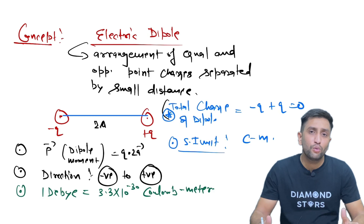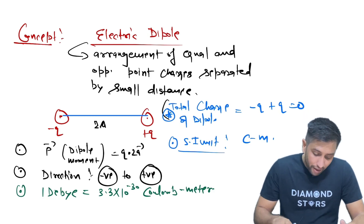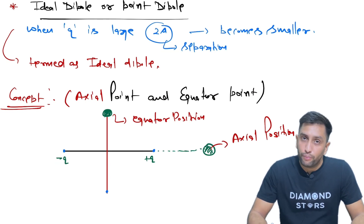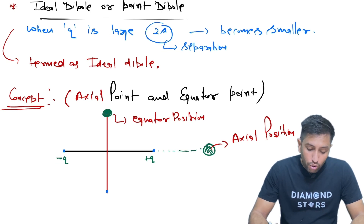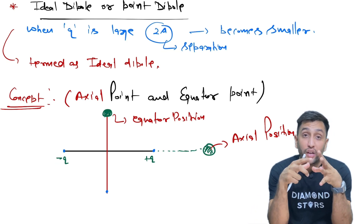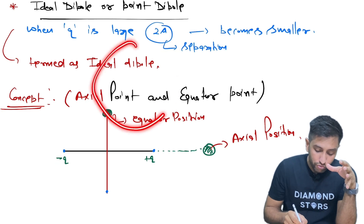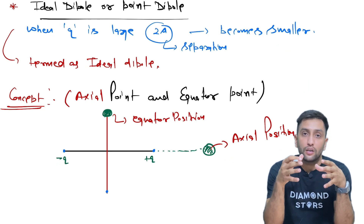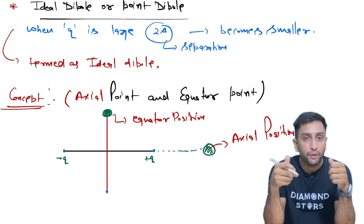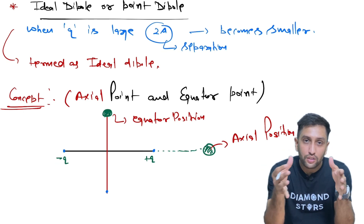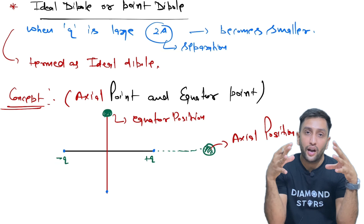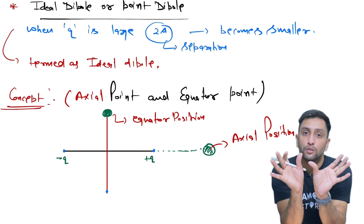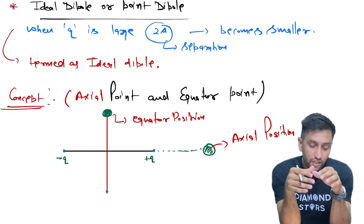When you are asked what is the net charge over the dipole, definitely it is 0. The SI unit — the formula has q in coulombs and 2a as distance in meters, so the unit is coulomb meter. This is also defined in Debye, where 1 Debye = 3.3 × 10⁻³⁰ coulomb meter. Now let me switch to a very basic concept — the ideal dipole. When q is very large and the distance is very small, you take it as an ideal dipole. That arrangement where charges are very large and separation is very small is known as ideal dipole or point dipole.